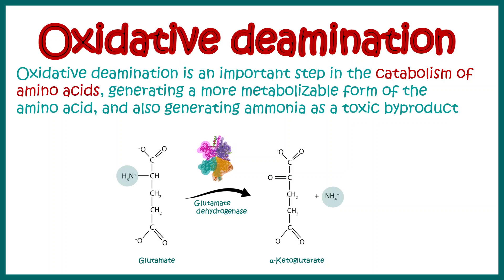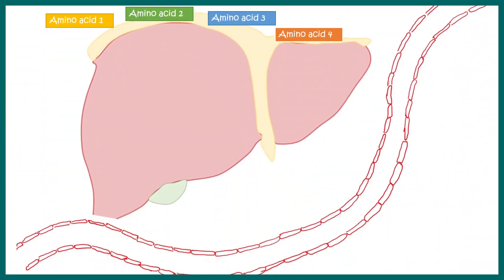In this short video we'll talk about the process of oxidative deamination. In short, this is a step in the catabolism of amino acids — that means breakdown of amino acids involves this particular step. This is the overview of amino acid catabolism; the detailed video is provided in the i-button.